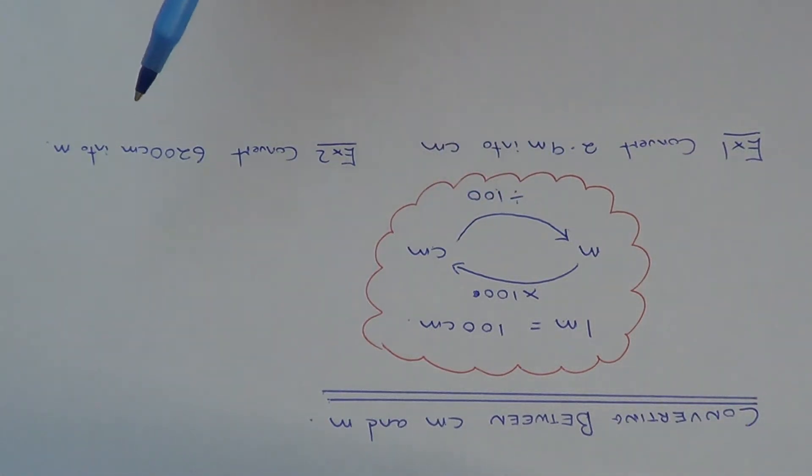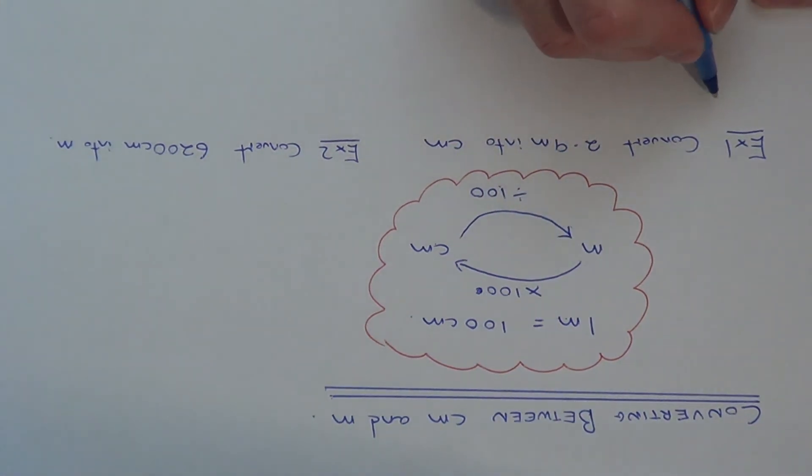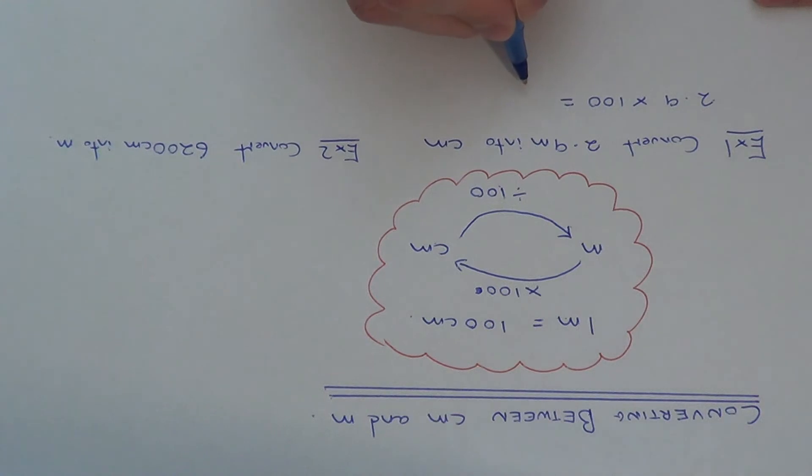Let's look at a couple of examples. In example one, we need to convert 2.9 meters into centimeters. Meters into centimeters means we multiply by 100. So we work out 2.9 times 100, which gives 290 centimeters.